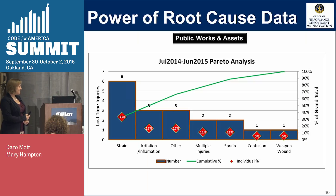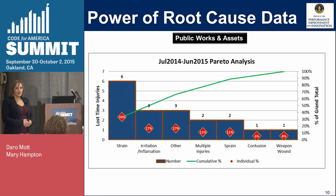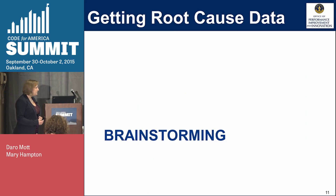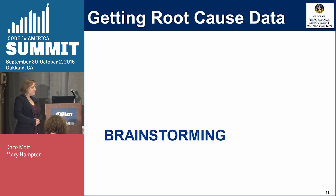Looking at the before and after Pareto charts, injuries are much fewer overall. Strains are still the highest category, but it's only 6 now instead of 54 — and much closer to the other categories with only 3, 2, or 1 injuries each. As an improvement professional, the question after seeing improvement is: how do you know that what you did made a difference? Your before-and-after Pareto charts validate that you haven't accidentally performed better — you've done something that addresses the root causes of why performance was less than desirable.